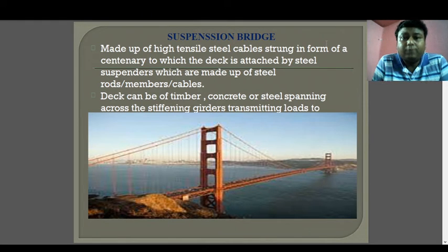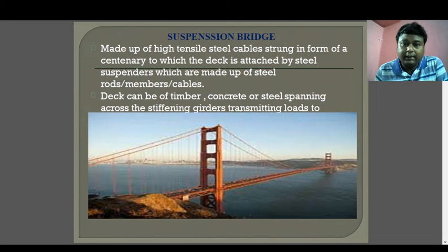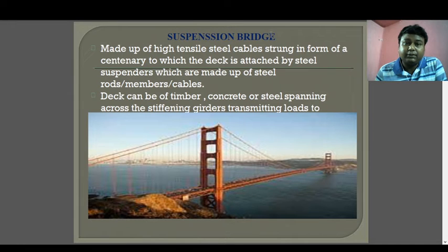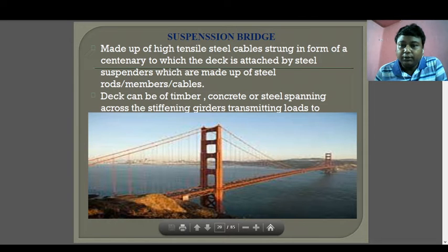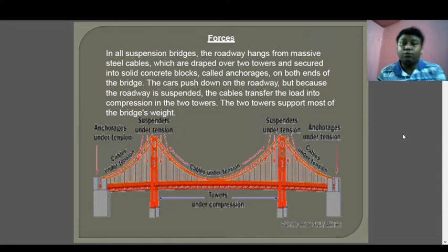Suspension bridges are made up of high-tensile steel cables strung in a catenary, to which the deck is attached by steel suspension rods and cables. If you look at the diagram, you can see these rods made up of steel — that is why it is called a suspension bridge, because the bridge is suspended. There are no pile supports in this bridge; the deck is suspended by cables.